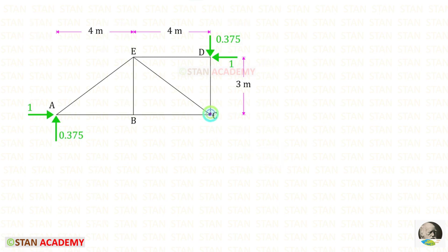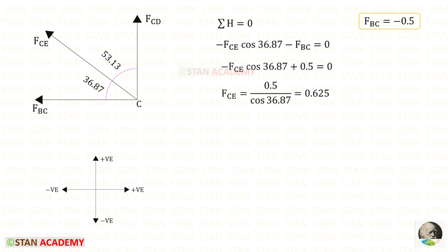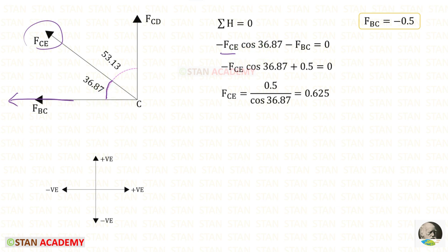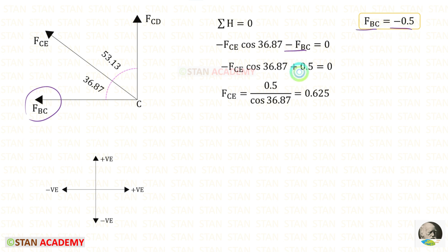Taking joint C in the unit load case, we only need to find F_CE. Using Sigma H = 0, resolving F_CE horizontally by multiplying cos 36.87°. It acts towards the left (negative), and F_BC also acts towards the left (negative). Applying the value of F_BC and noting negative × negative = positive, for F_CE we get 0.625.